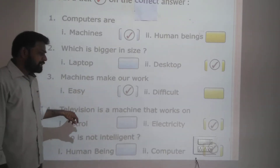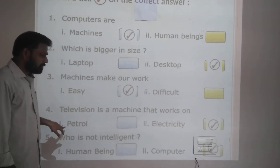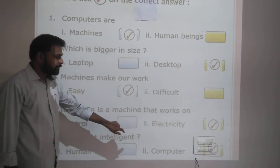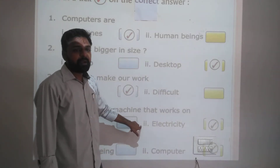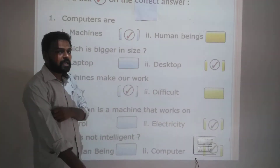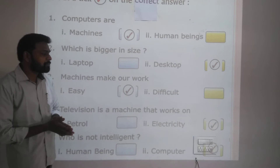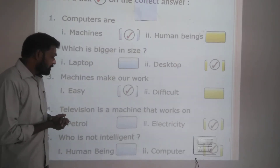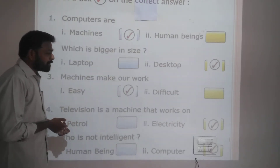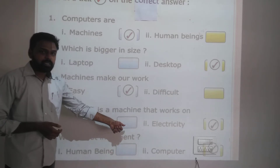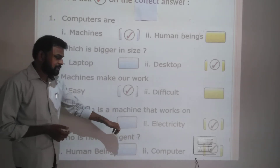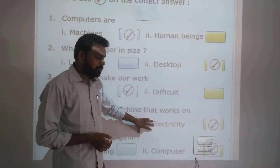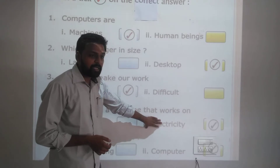Television is a machine that works on — option one: petrol, or option two: electricity? If you have a TV — we call it a television, in short we call it a TV. Does it work on petrol or electricity? Yes, it works on electricity. So tick electricity.